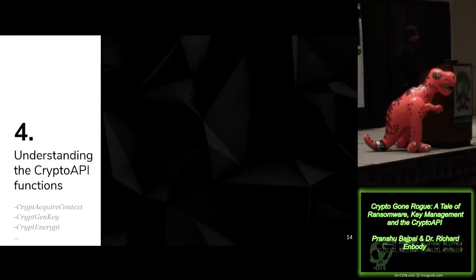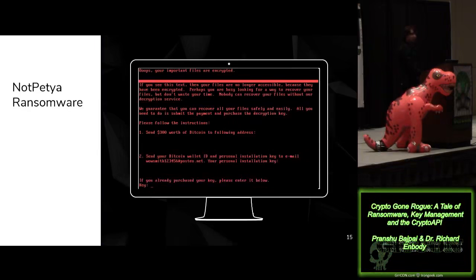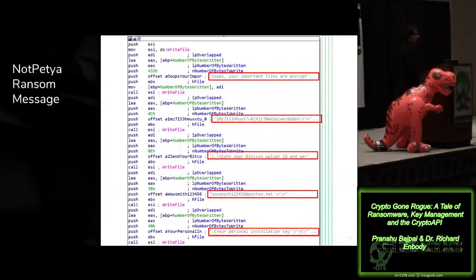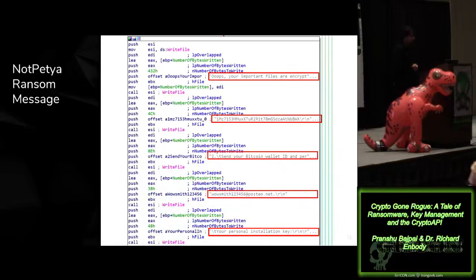With that, let's try to understand the actual crypto API functions that the ransomware is using. We'll take a look at the NotPetya ransomware. Once the NotPetya ransomware infects the host, this is the ransom message you're greeted with. We went ahead and disassembled the NotPetya ransomware. Once you disassemble a malware, most of the time you'll come across some sort of UPX packing, so you have to unpack the malware. After that, you can read through its assembly code. Our objective is to identify the actual functions in the DLLs that it needs to execute. The ransom message is easy to spot — it's all in text form: 'Oops, your files are encrypted,' followed by the Bitcoin address and the attacker's email address.